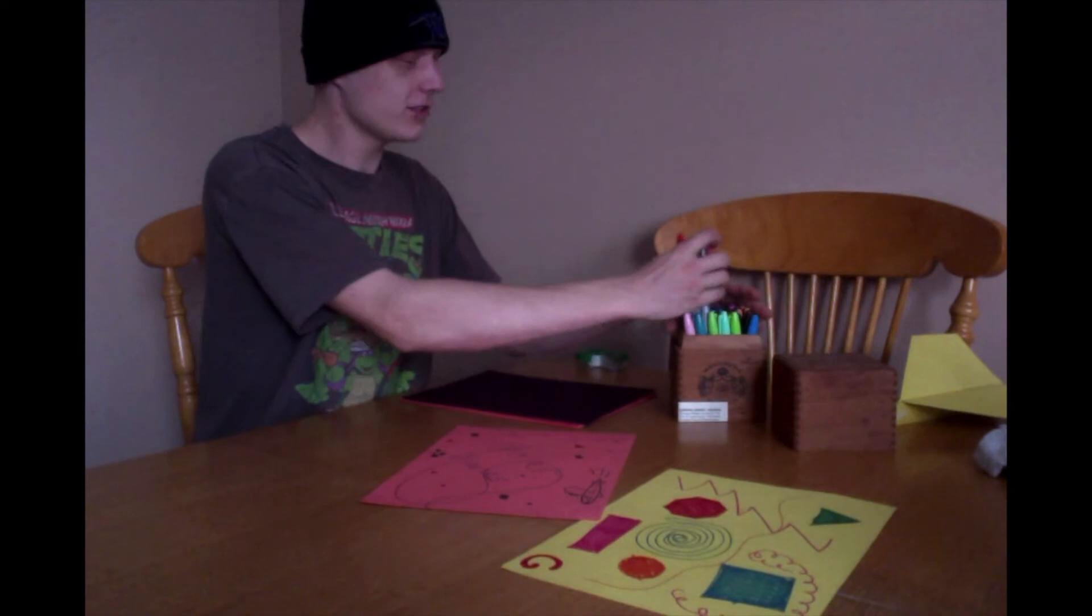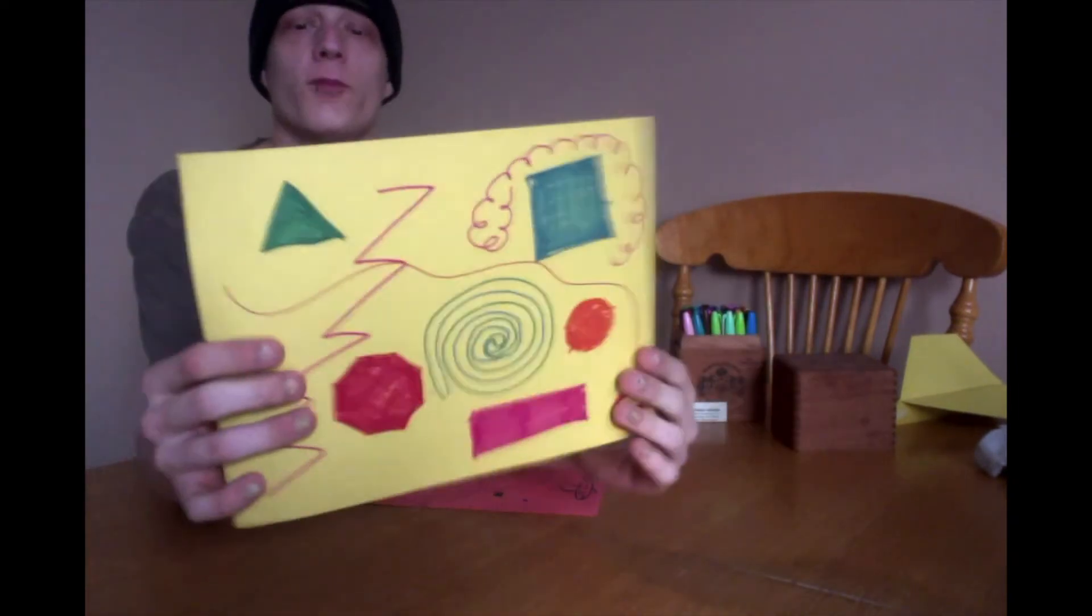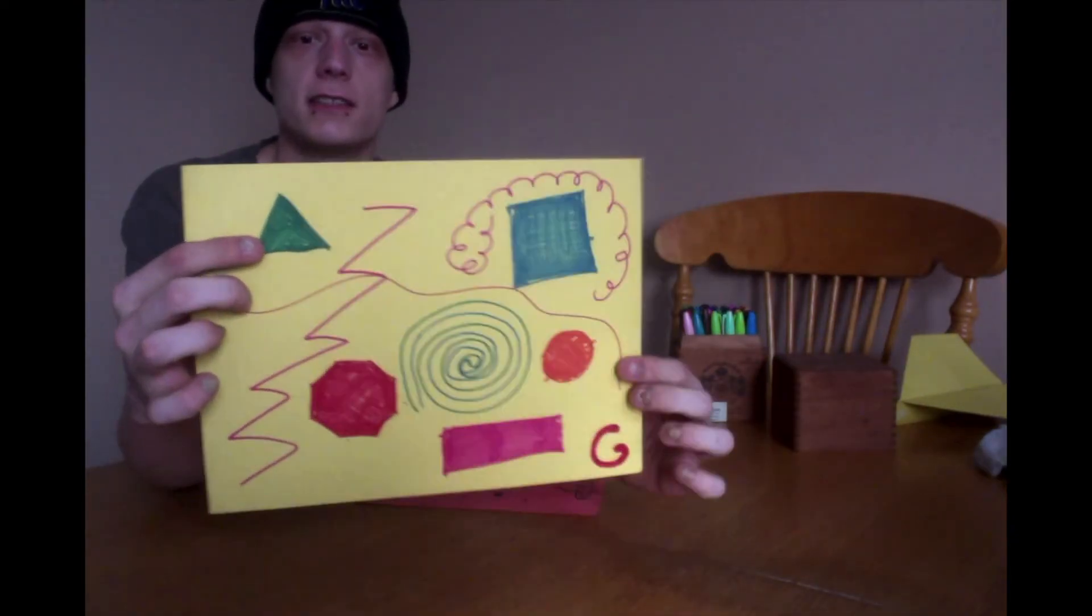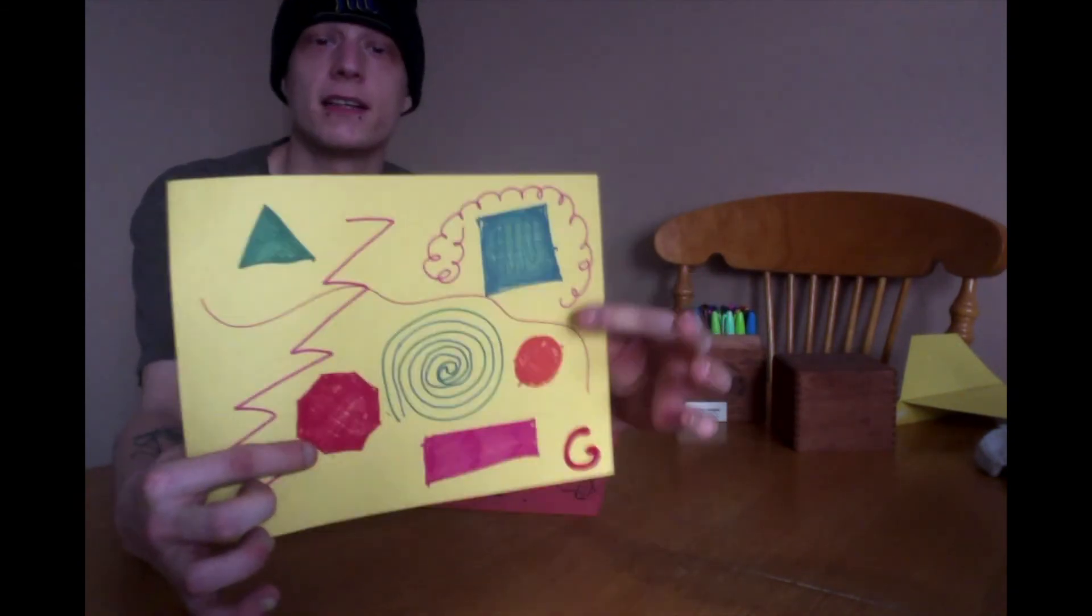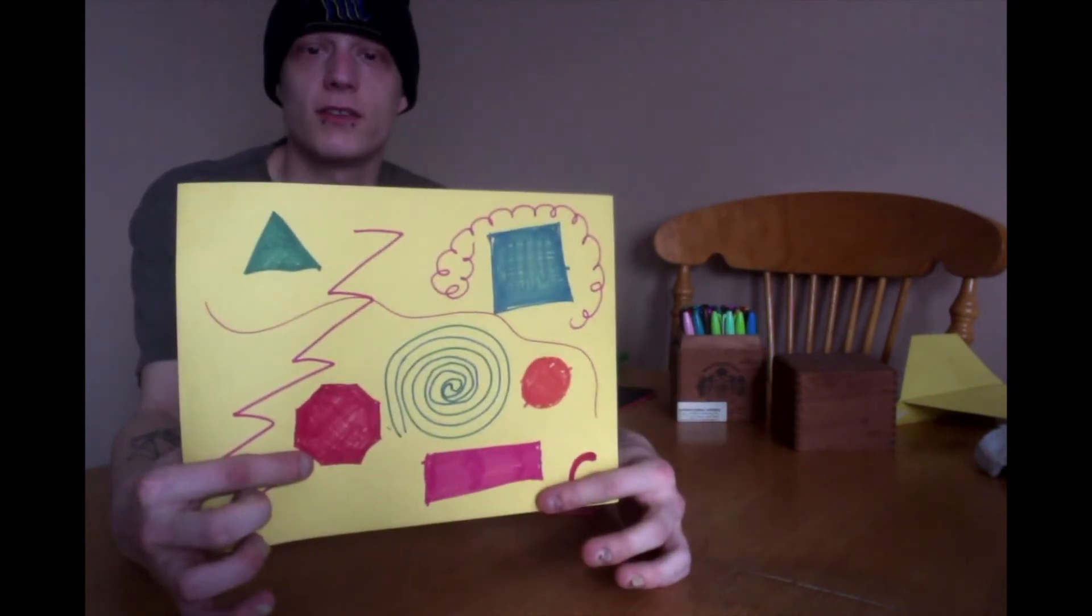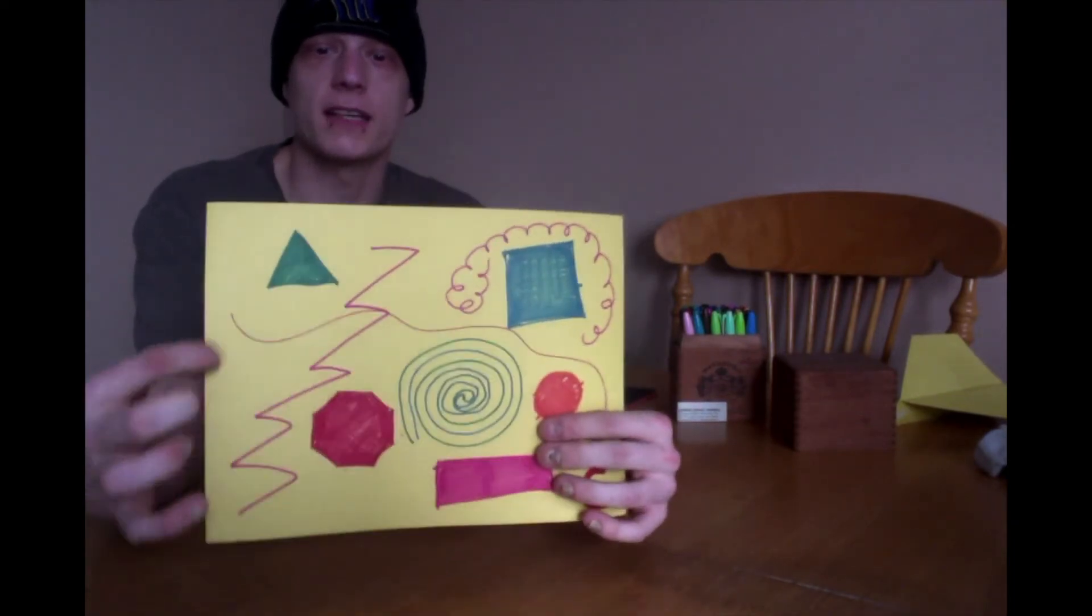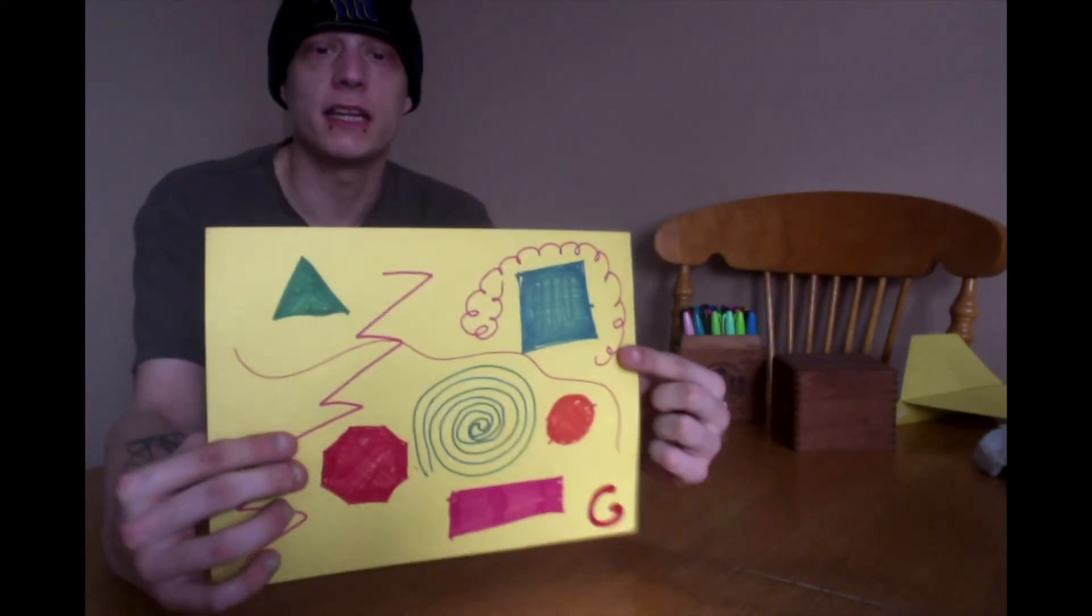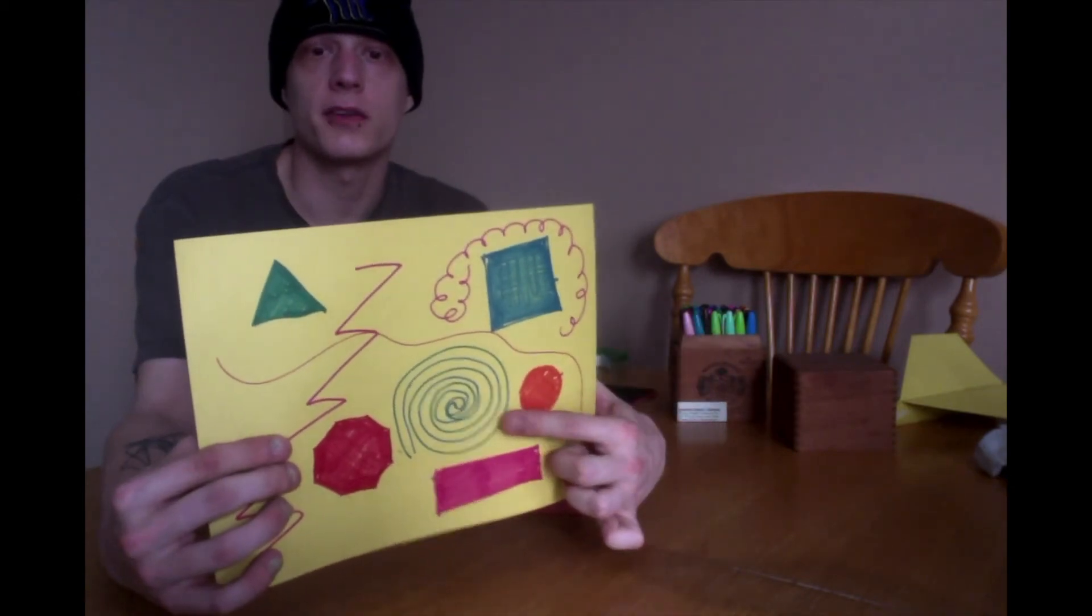So I finished coloring on my pieces of paper. This is one of them. What shapes do you see? I see a green triangle, a red octagon, a blue square, an orange circle, and a pink rectangle. And then I have some lines. I got a squiggly line. I got a sharp pointy line. And then I have a twirly line. Oh, and then we got a spinny circle.